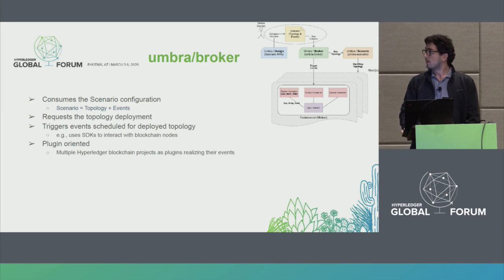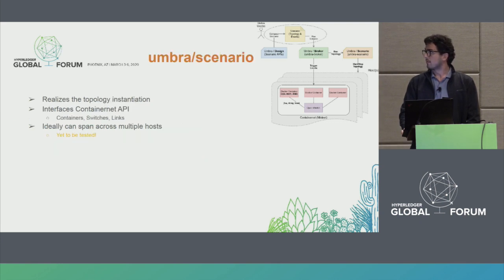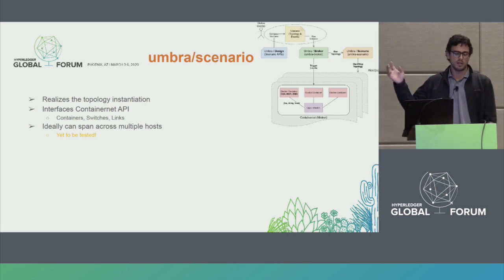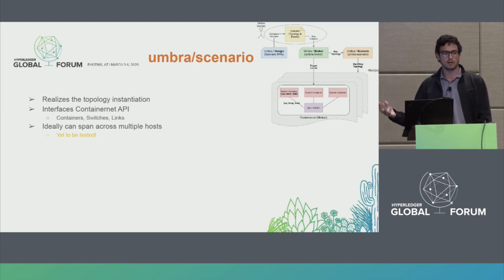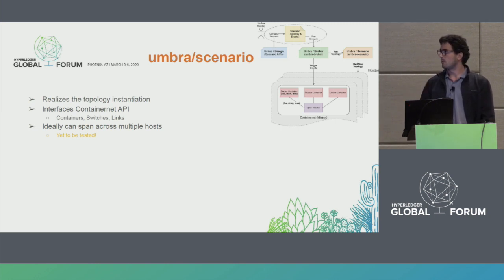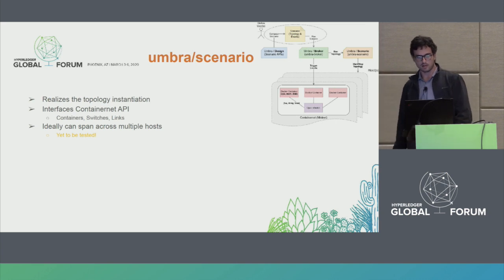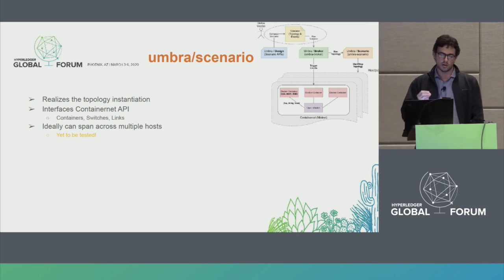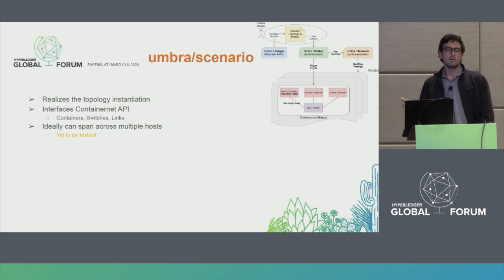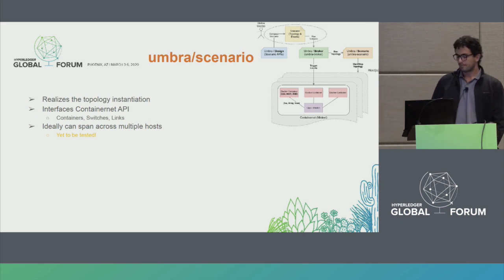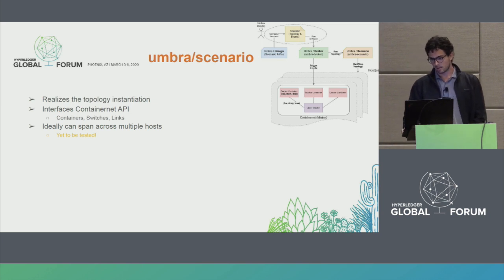The Umbra Scenario makes use of Mininet — here called ContainerNet API — which instantiates the containers and the links to interconnect them, configuring restrictions of CPU, memory, bandwidth, and packet loss. Ideally, this component can span across multiple hosts. This is the scaling test I'm working on now — to make it run across different servers and scale to hundreds and thousands of nodes.